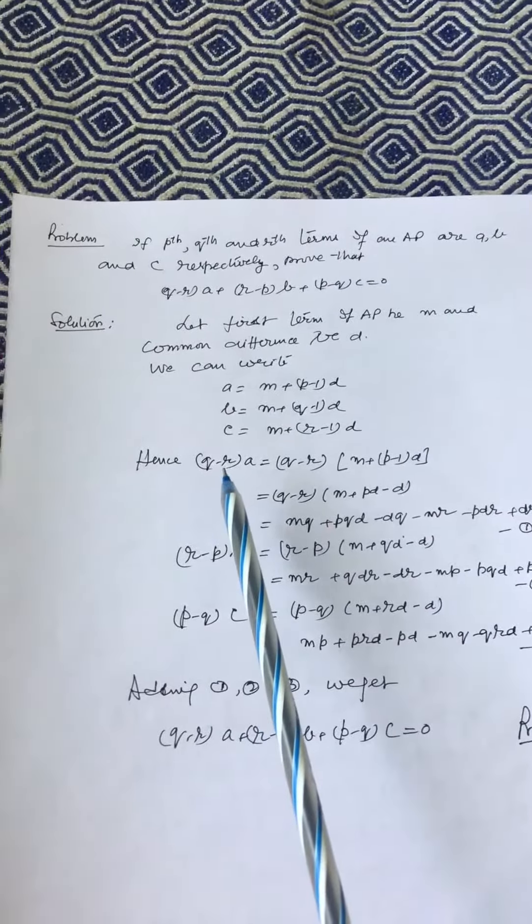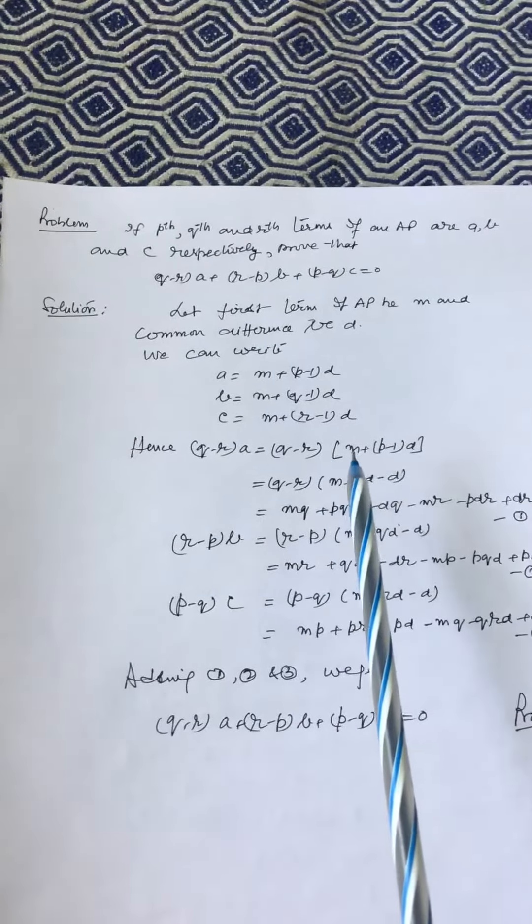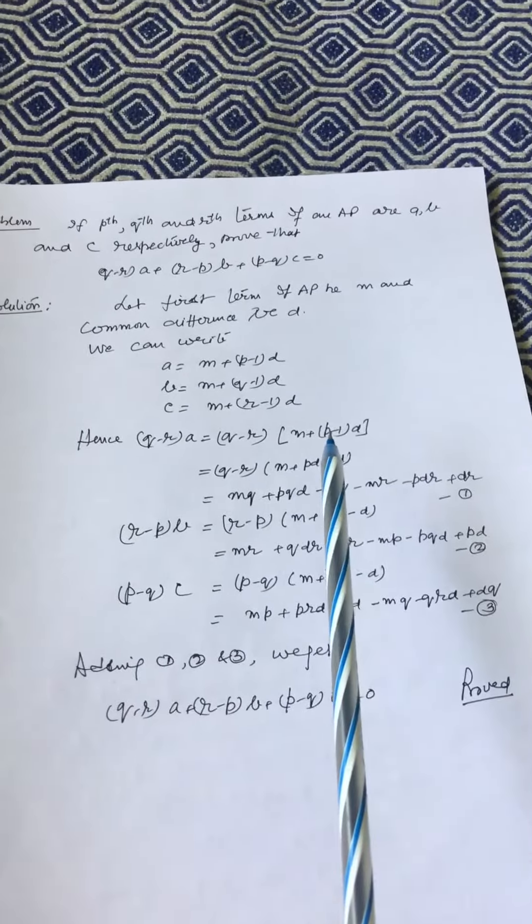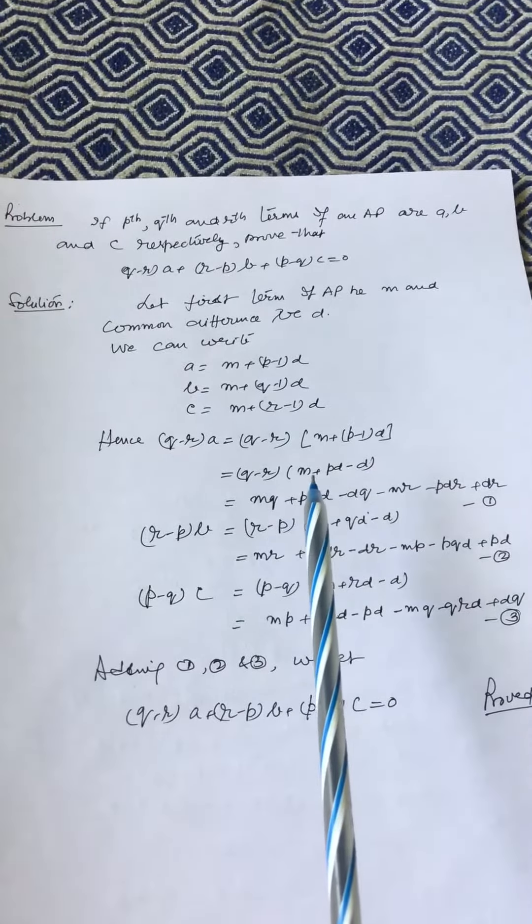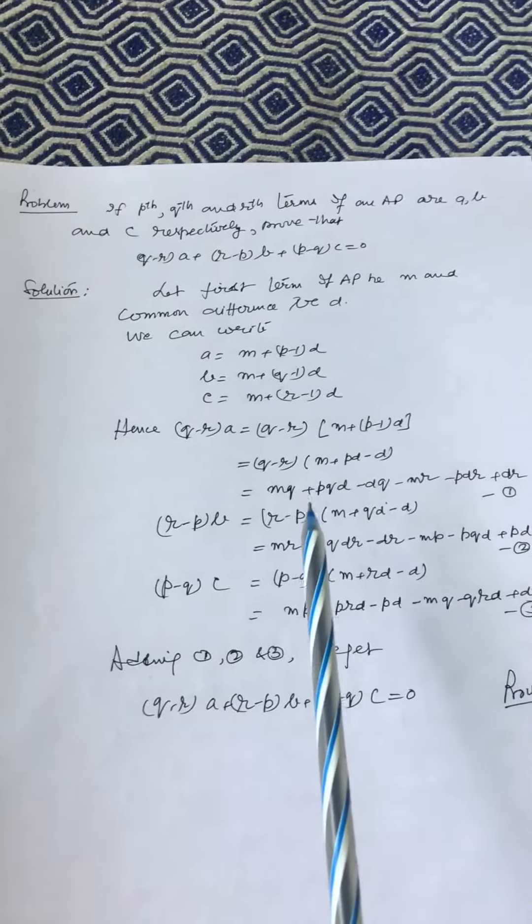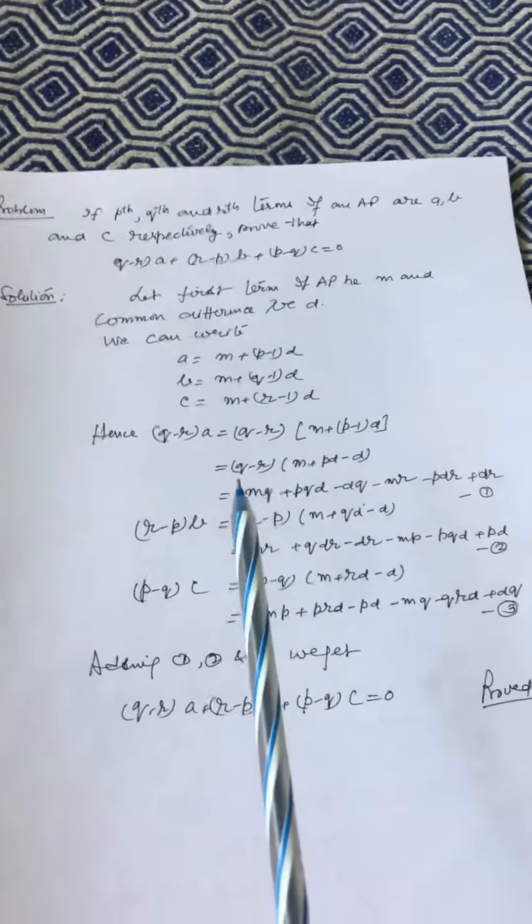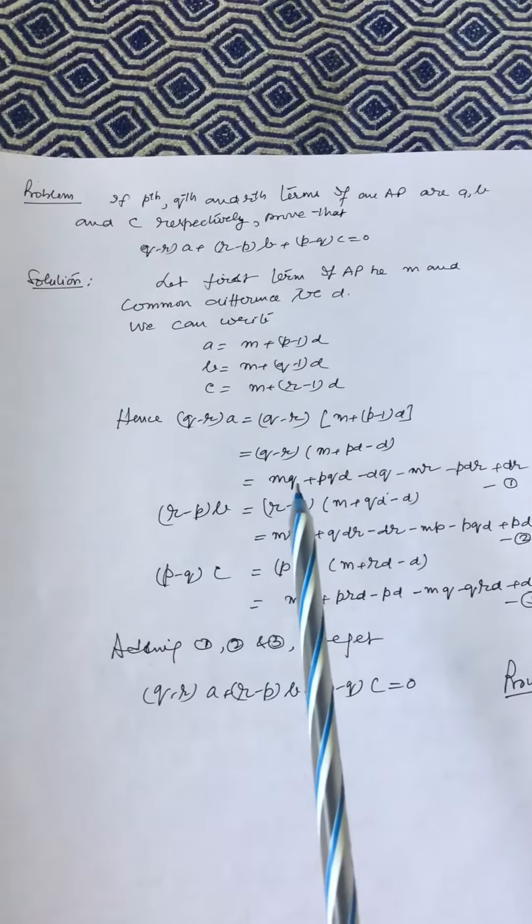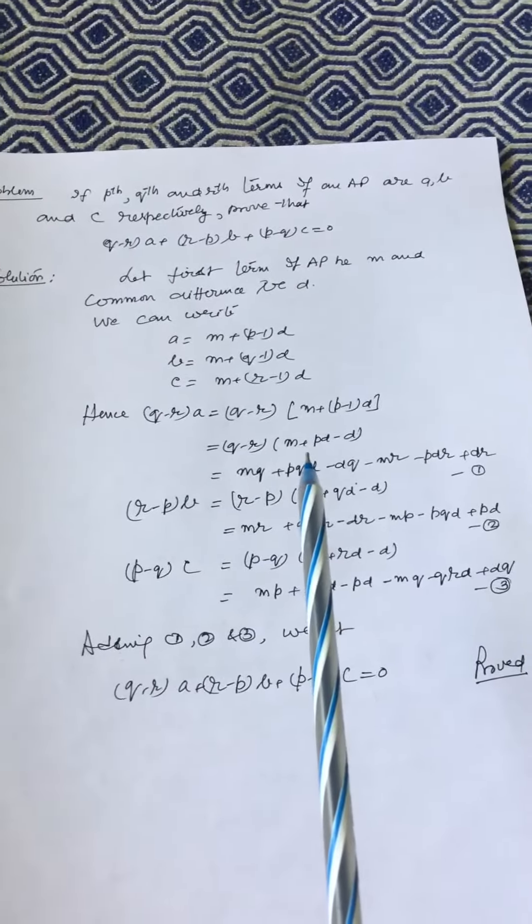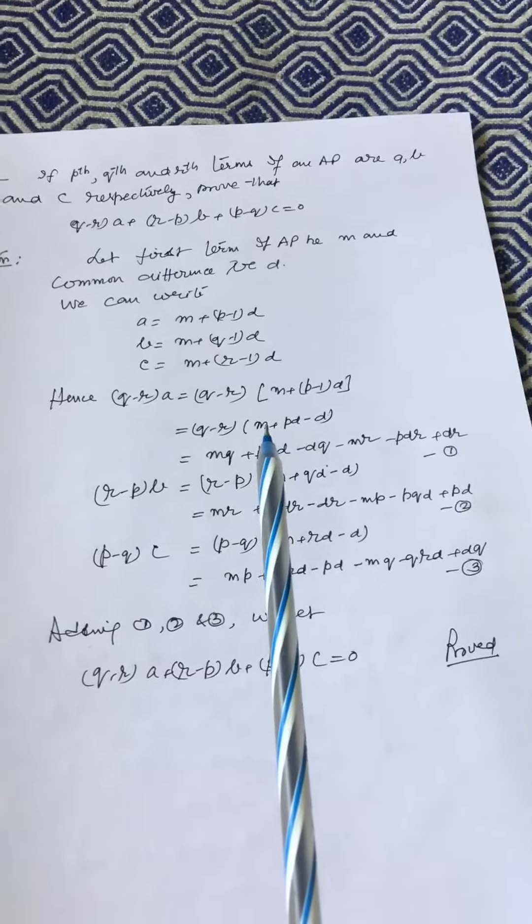Hence (Q-R)A = (Q-R)[M + (P-1)D] = (Q-R)M + PD - D. Then we multiply these and get MQ + PQD - DQ - MR - PRD + DR.